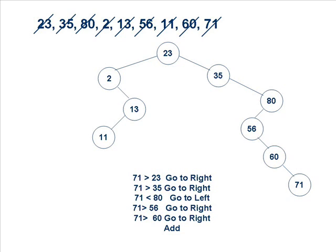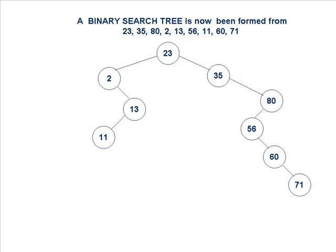Our last number is 71. We repeat the same process — compare with 23, move to the right. Compare with 80 — 71 is less than 80, so we move to the left hand side of 80. We find node 56 there. Compare 71 with 56 — 71 is larger, so we move to the right, but there is already a node there. We compare 71 with 60 and find that 71 should be placed on the right hand side because 71 is larger than 60. With this, we have created a complete binary search tree from the given list.